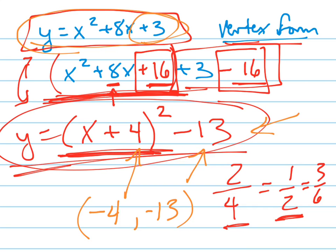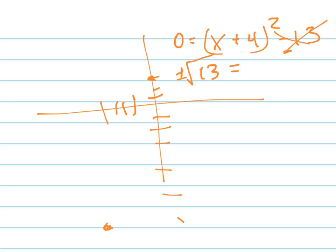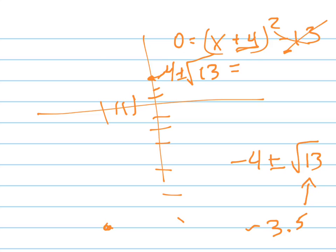It's got two x-intercepts, which are also easier to find in vertex form. If I have x plus 4 squared minus 13 and I want to find the x-intercepts, I plug 0 in for y and solve for x. Solving for x means getting rid of the 13 by adding it, taking the square root — don't forget the plus or minus sign — and subtracting 4. That gives negative 4 plus or minus the square root of 13. The square root of 13 is about 3.5, somewhere between 3 and 4. So I'm moving about 3 point something to the right of the vertex and 3 point something to the left. And there's my graph.